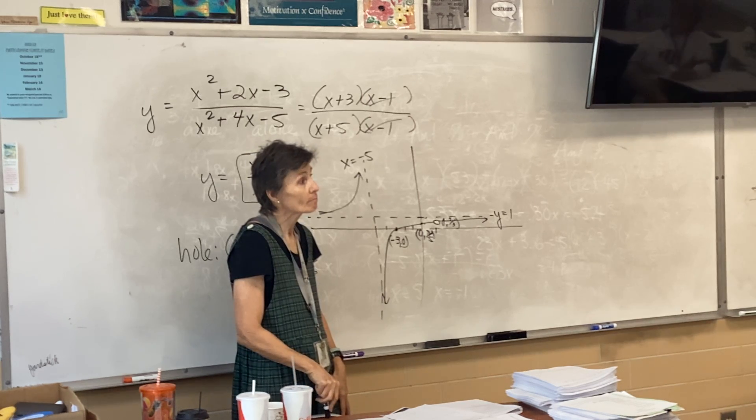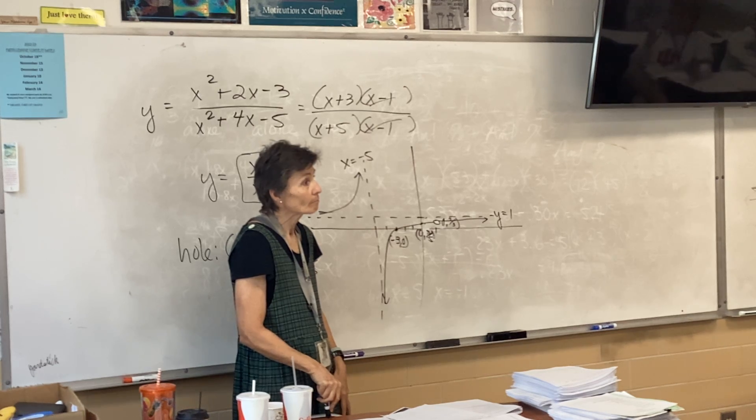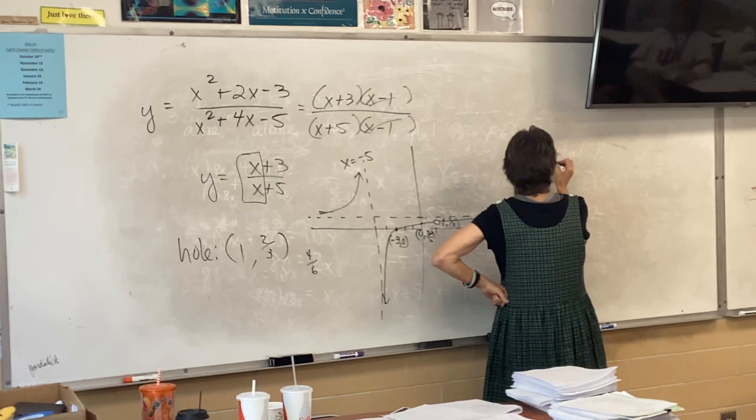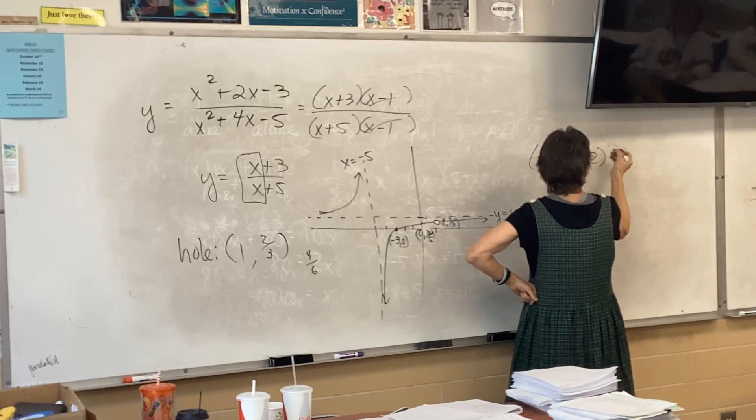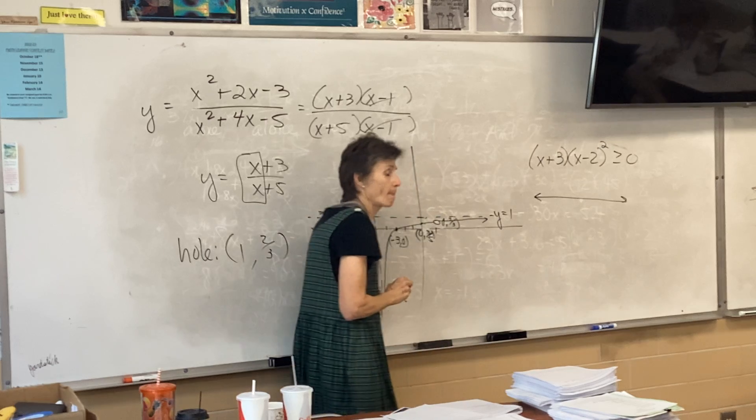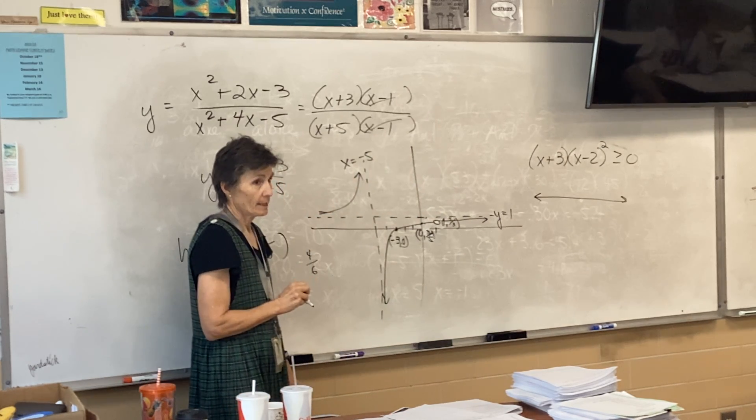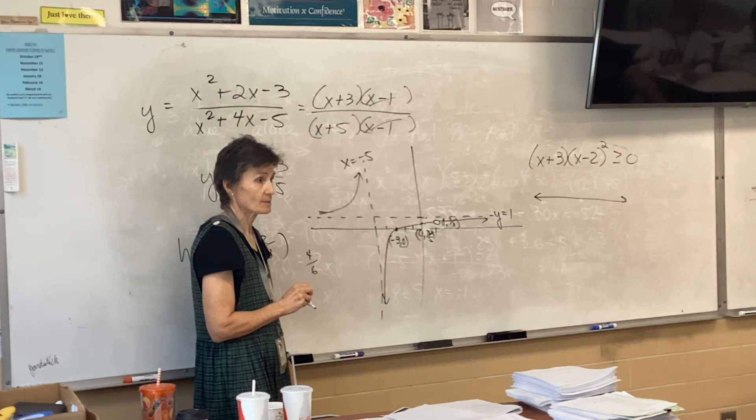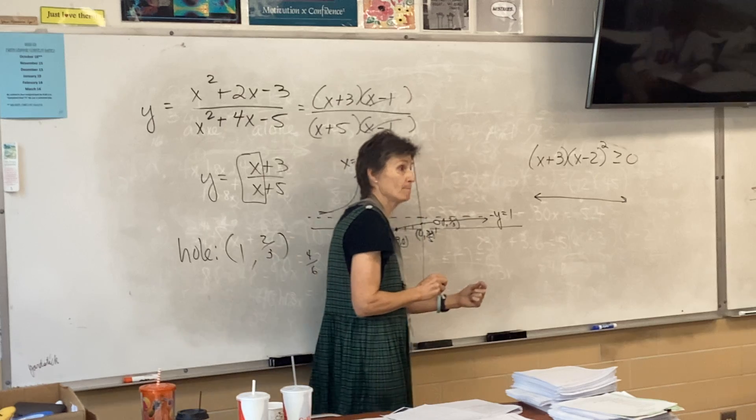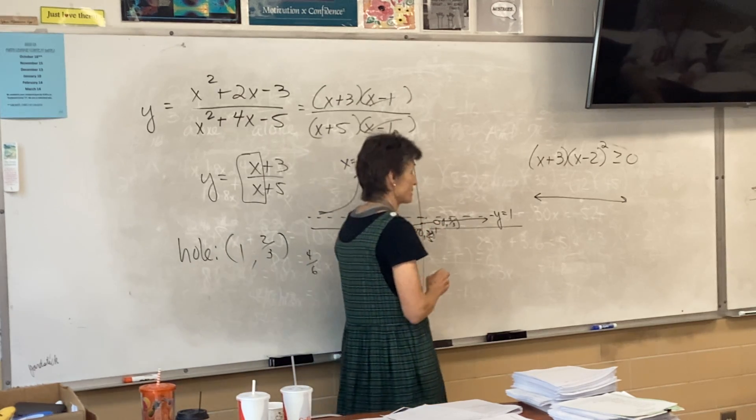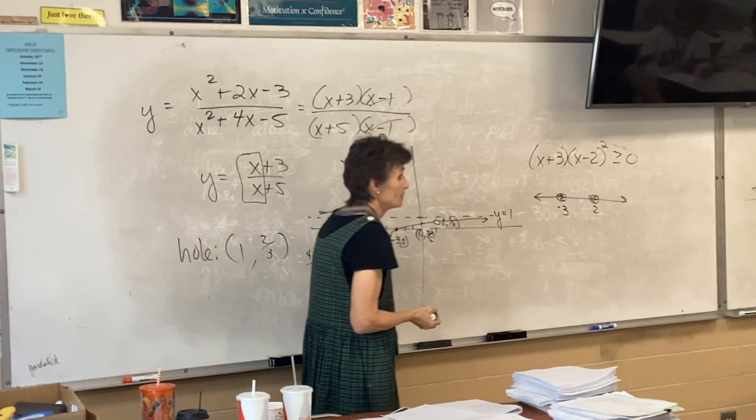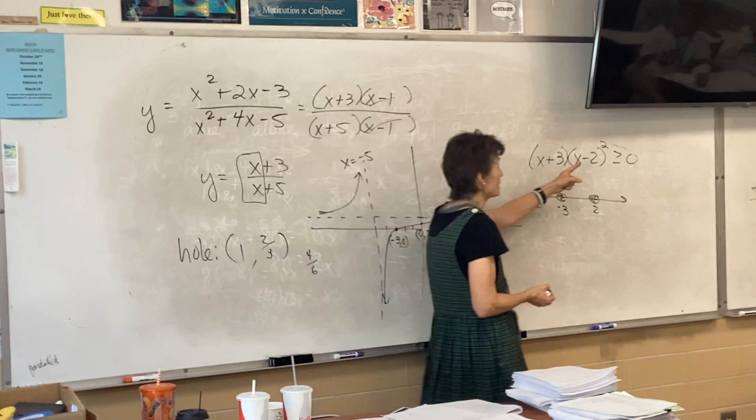Can you do an inequality where one of these is squared? So a problem like x plus three times x minus two squared is greater than zero. You're gonna have inequality like this on every practice test. So we've already got the zero. What do we do now? You've got the points, they're right there, negative three and two. You color them in.